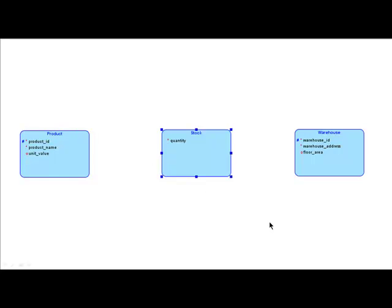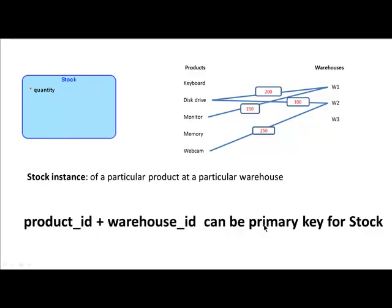We need to worry about the primary key for stock. Clearly, product ID alone cannot be the key for stock, nor can warehouse ID, because stock is a particular product in a particular warehouse. Therefore, the primary key for stock can be product ID plus warehouse ID — the combination can be the primary key.